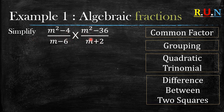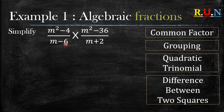Now when we look at our question, if you are familiar with those four methods, you can already tell that both numerators are the difference between two squares. Now let's look at the denominators — the denominators are just expressions, it's m minus 6. Now like I told you in the previous video, if you see two terms, always put them in brackets.